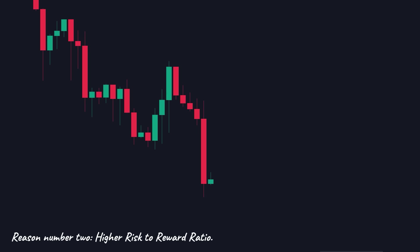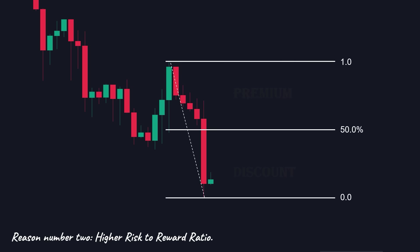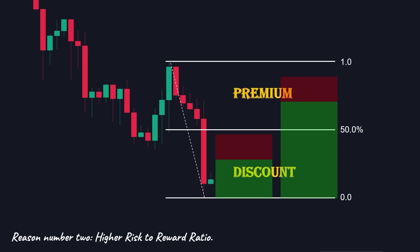Reason number two: higher risk-to-reward ratio. We know that no matter where our entry is, the first target for the trade is this recent level of market structure. When the price taps into this level, some traders will close their positions or take some profits. Others might go long. This can create a correction or even reverse the direction. So this level is going to be our first target. If you enter in the discount zone, our risk-to-reward ratio would be too low. We always want our trade to have more than a one-to-one risk-to-reward ratio. That's why trading inside the premium zone will give us a higher risk-to-reward ratio and a rational trade.